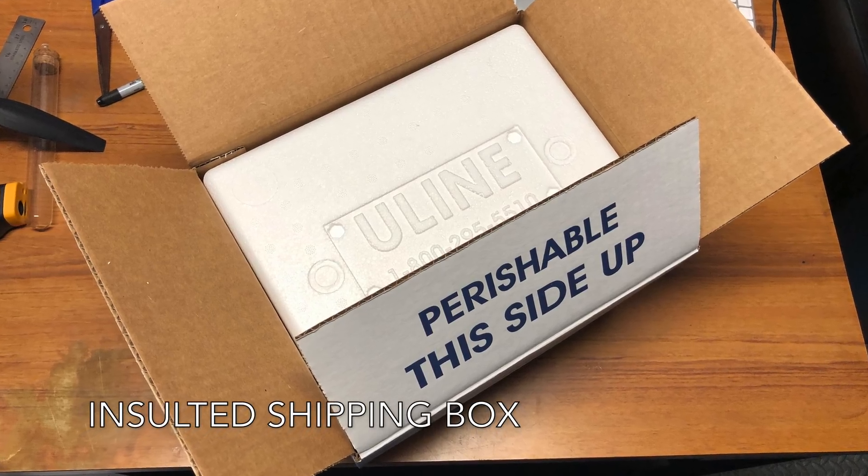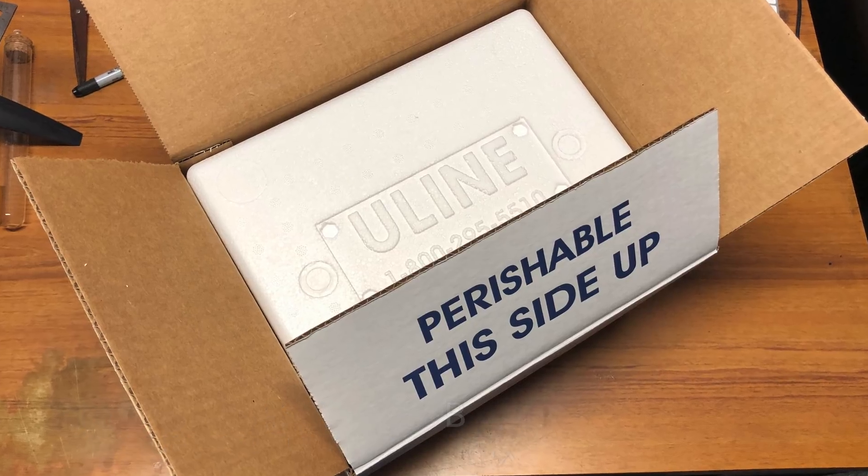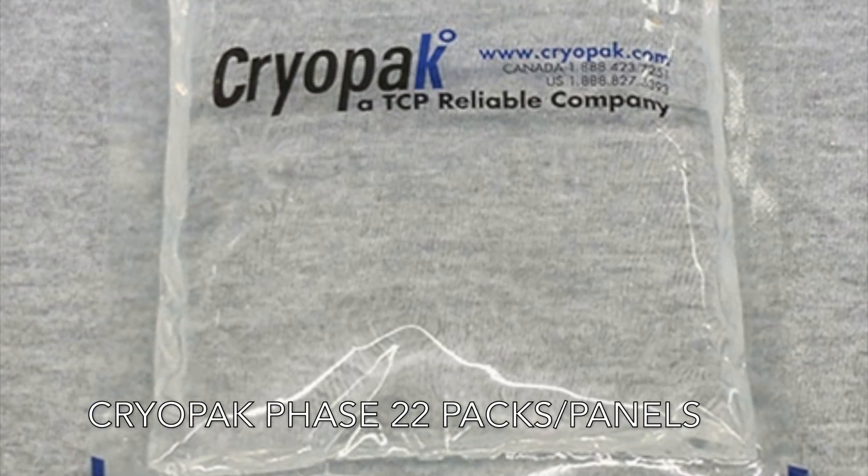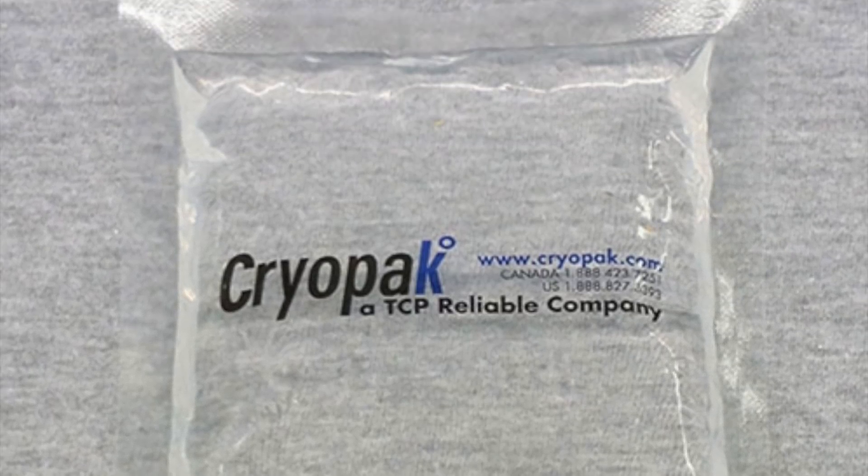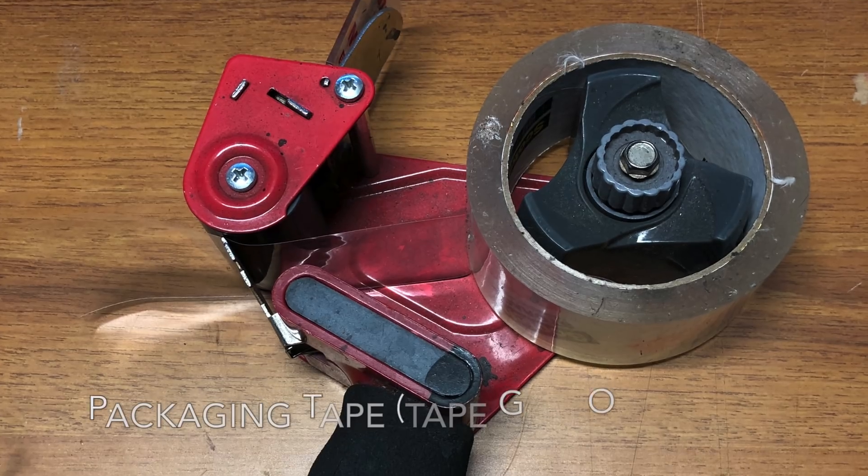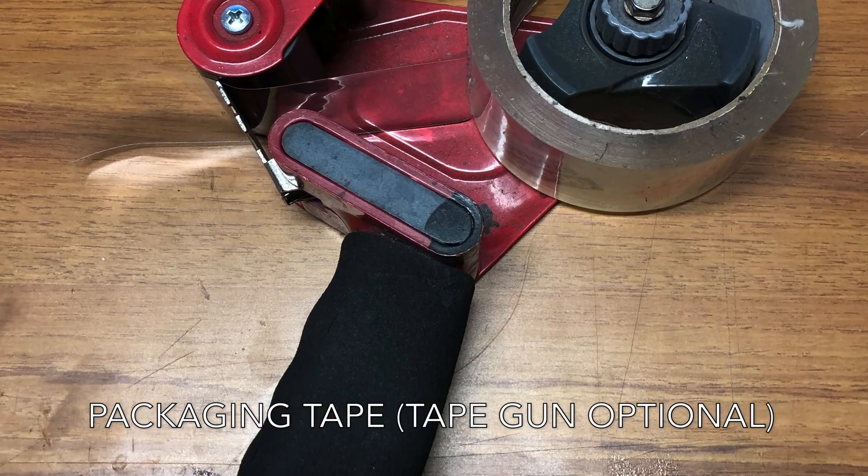In order to do so, there's a couple specific items you're going to need. First, you're going to need some sort of insulated shipping box. I use the Uline brand. Cryopack Phase 22 packs or panels. I use the packs just because they fit in smaller boxes. Some packaging tape. The tape gun is optional.